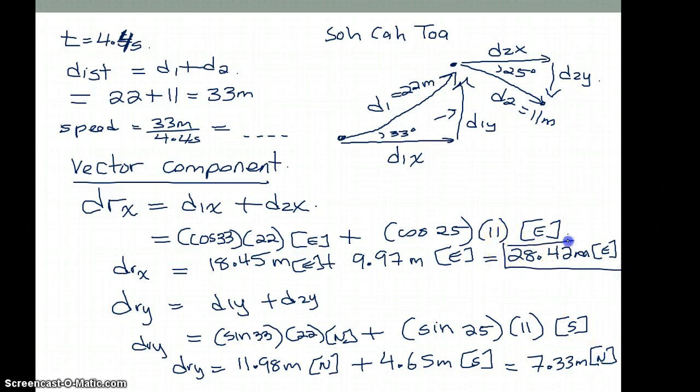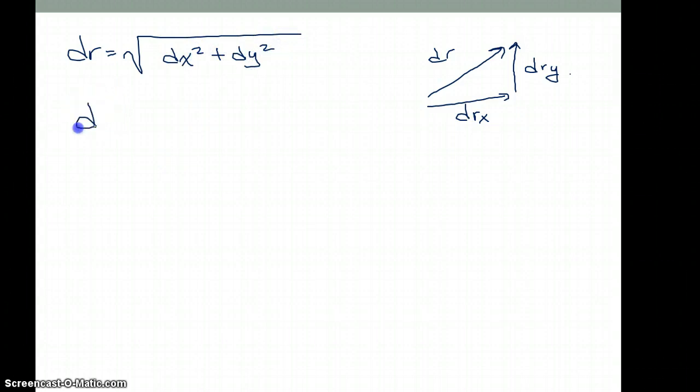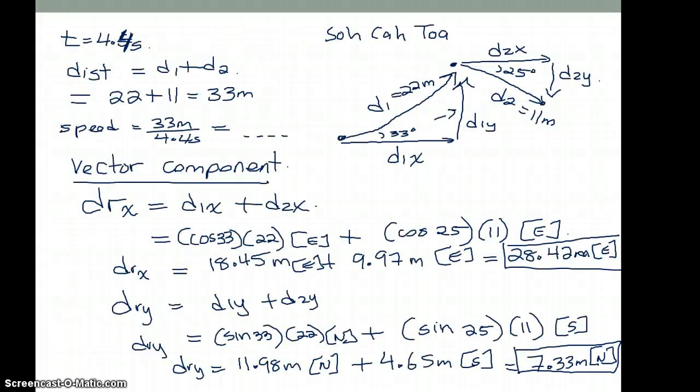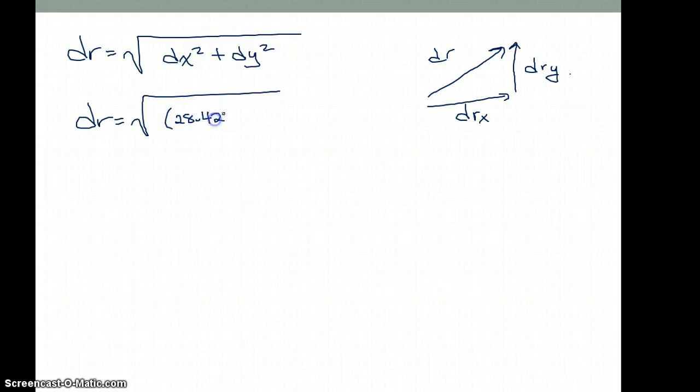So that is my x component, this is my y component. We're not done, so we're going to continue. Now we're going to take the dx and the dy, which was east and north, to get my d resultant. So the dr, which is the square root of dx squared plus dy squared, gives you the following. Let's get our numbers: 28.42 and 7.33. So 28.42 squared plus 7.33 squared.